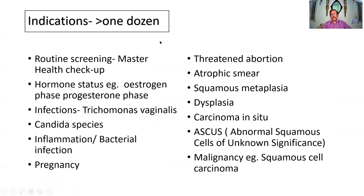What are the indications of a Pap smear? This is an important question. First, routine screening — part of master health checkups to rule out malignancy or infection. Second, to assess hormone status — there is an estrogen phase and a progesterone phase. Third, infections such as Trichomonas vaginalis, fungi such as Candida species, and any inflammation due to bacteria. Fourth, pregnancy can also be identified.